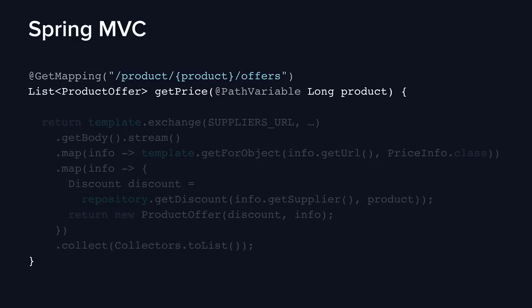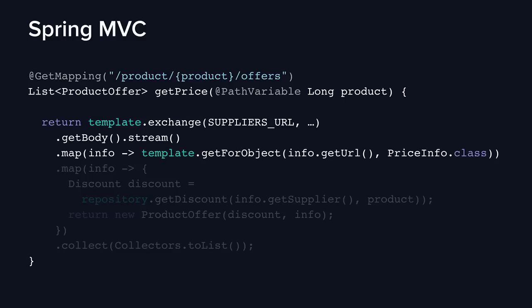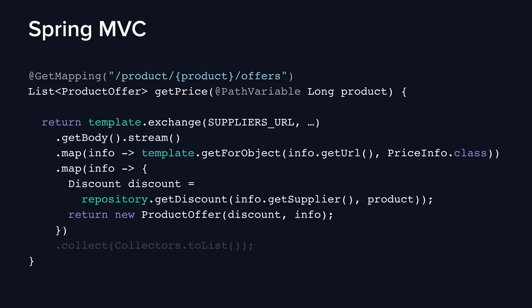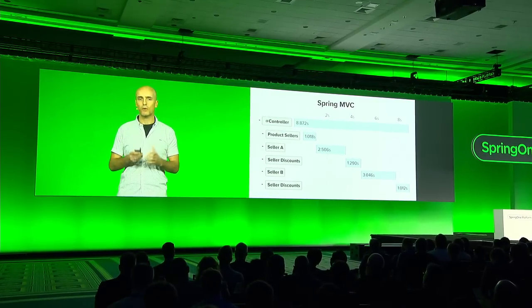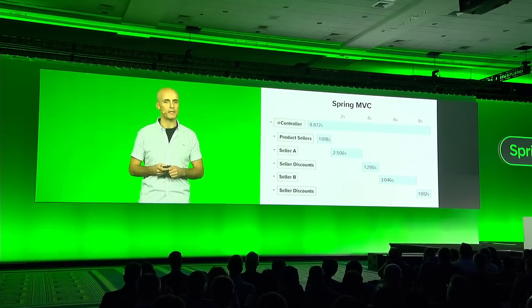In Spring MVC, this would be relatively simple. We'd create a controller method that returns a list of product offers, make one call to the supplier remote service, get back a list of suppliers, turn that into a Java 8 stream, make a second call to the supplier URL, and finally make a call to the database using a repository to find the discounts. All of this is simple, but it comes with a price: inefficient waterfall sequential execution. Some of these calls may take one or two seconds each, so if we add them all together, we may end up with a request that takes eight or nine seconds or more.